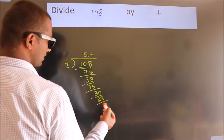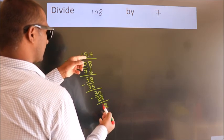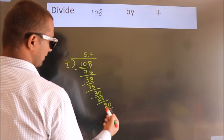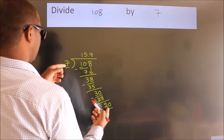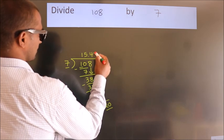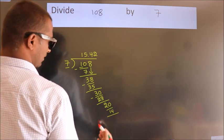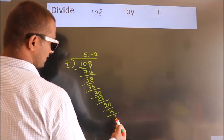After this, we already have the decimal, so directly take 0. So 20. A number close to 20 in the 7 table is 7 twos, which is 14. Now we subtract. We get 6.